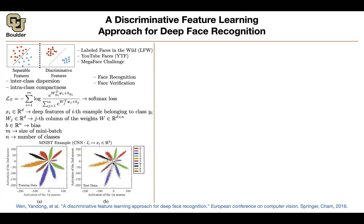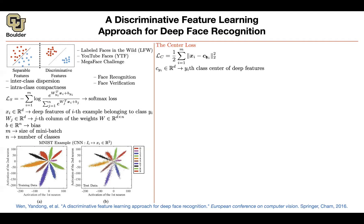This paper introduces the center loss. How does it work? You have a loss per each class, per each identity. You have a vector — think of this as the center of the images in that class — and you try to match these features in a mean squared error sense. c_y_i is the center for the class corresponding to image x_i; you want the features of x_i to be close to the center of that class. This is similar to clustering: you are doing classification with the softmax loss while also doing clustering at the same time, trying to make images as close as possible to the center of their cluster.